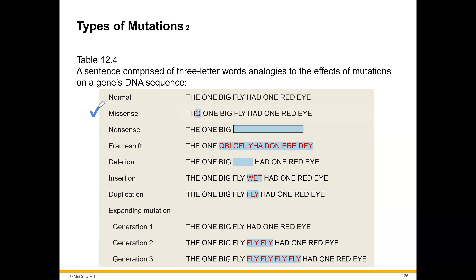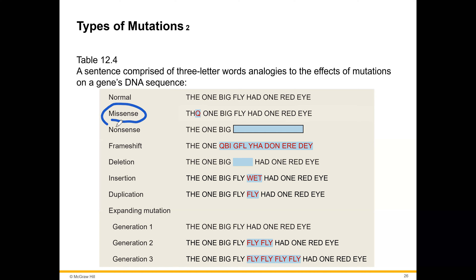A missense mutation is when one letter is replaced by another — for example, replacing a letter with Q. This gives the wrong triplet, possibly resulting in the wrong amino acid, but the rest of the information is not changed. Missense means you replace one nucleotide with a different nucleotide.